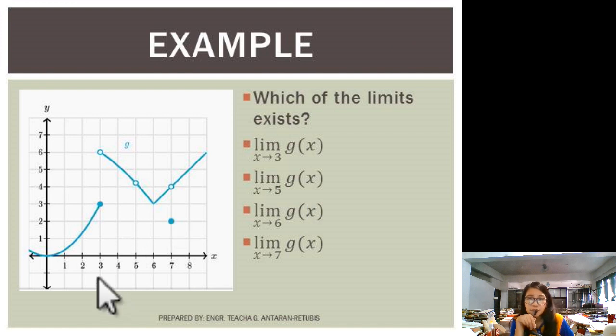So it should be the same from the right and from the left. Okay? Let's start with the right. Where is 3? This is 3. Okay? This is 3. So as you approach from the right, what's the value of your g of x? It is 6, right? But if you approach from the left, what's the value of your g? 3. So what can we conclude? So since they are not the same, therefore,